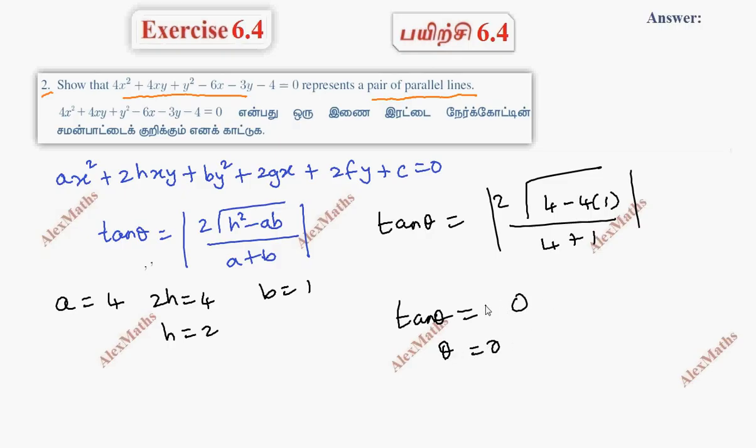Since the angle is 0, this represents a pair of parallel lines. Therefore, the pair of straight lines is parallel.